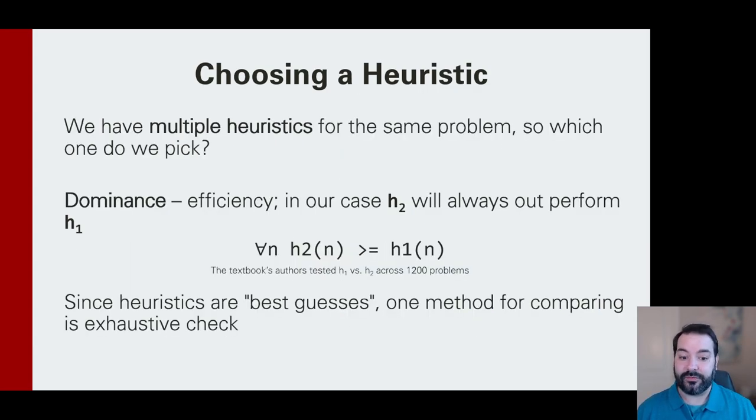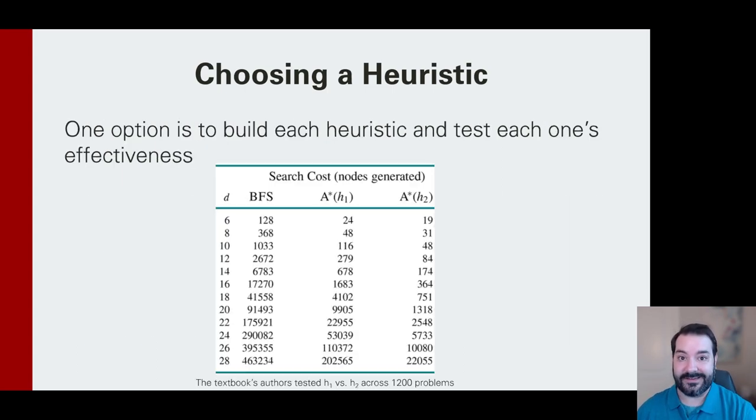What we would actually see if we were to run through both our H2 and our H1 is that over time, H2 almost always outperformed H1 when we were working off of an A-star search. And just to see this in action, this is from the textbook. We had H1, if that was the heuristic we were doing with A-star, at the start when we have a very small, easy solution, there's not a major difference between H1 and H2.